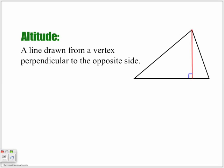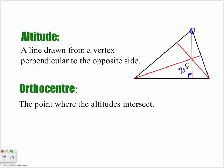The altitude is a line drawn from a vertex that goes perpendicular to the opposite side, making a 90-degree angle with that side. If we draw altitudes from each vertex point, each forming a 90-degree angle, they all meet at one point called the orthocenter — the point where all the altitudes intersect.